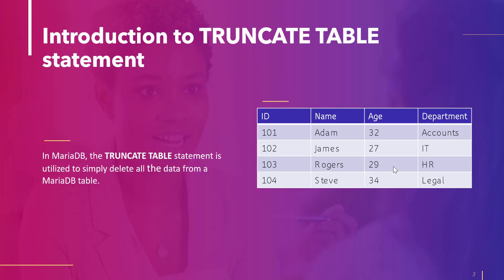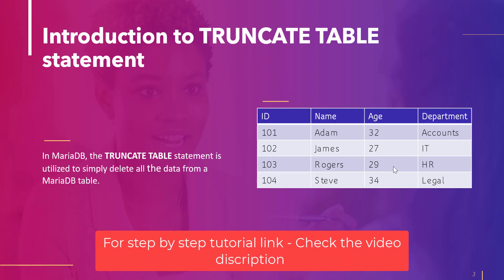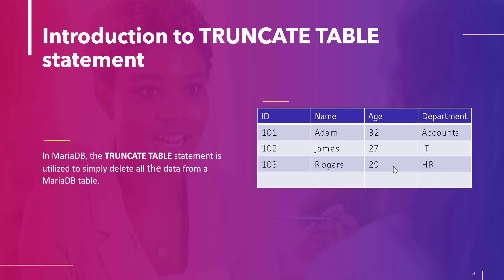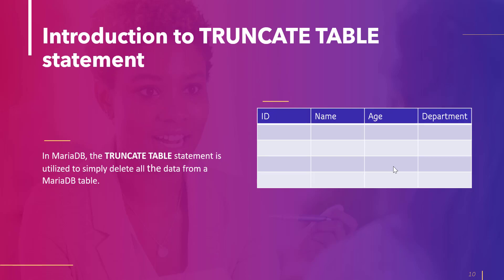To truncate a table in MariaDB we use the TRUNCATE TABLE statement. Its key role is to delete all the data from a table. It is similar to a DELETE statement without a WHERE clause. The difference is that DELETE removes each row one by one, whereas TRUNCATE TABLE deletes the entire table and then recreates it without any data — making it much more efficient, especially for tables holding large amounts of data.